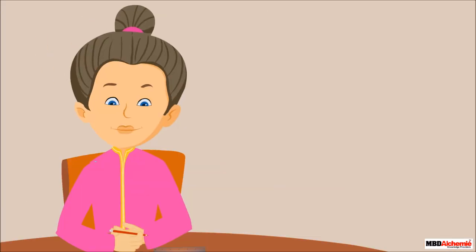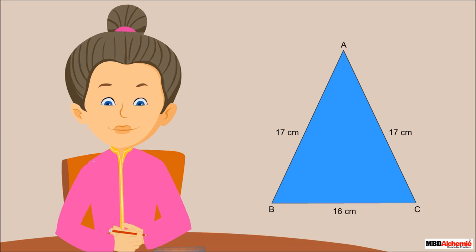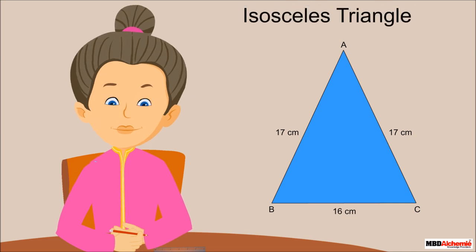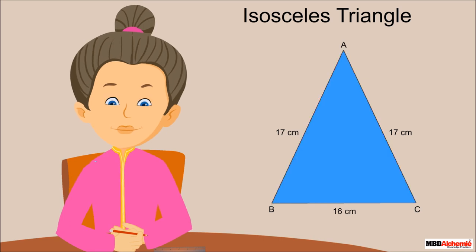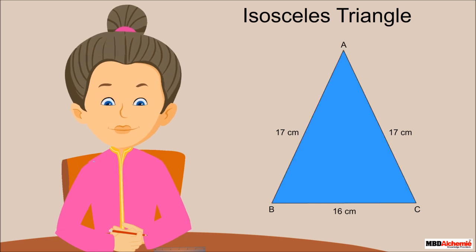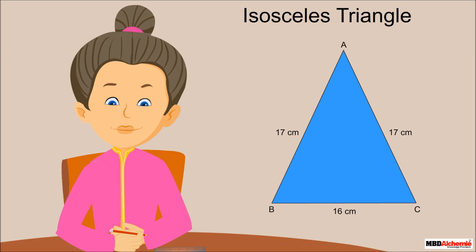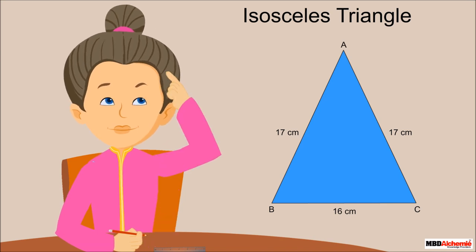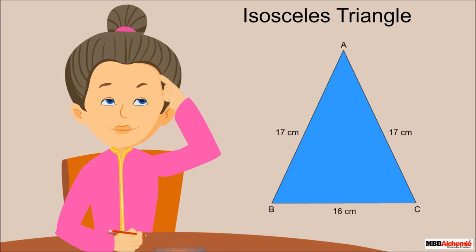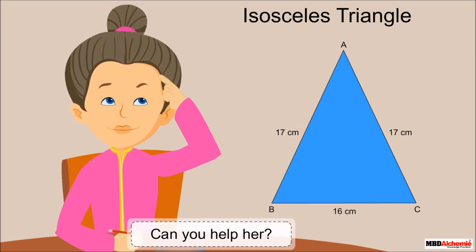Sophie says her triangle is an isosceles triangle because its two sides are 17 centimeters each. She knows the formula to find the area of an isosceles triangle, but first needs to find the height of the triangle.